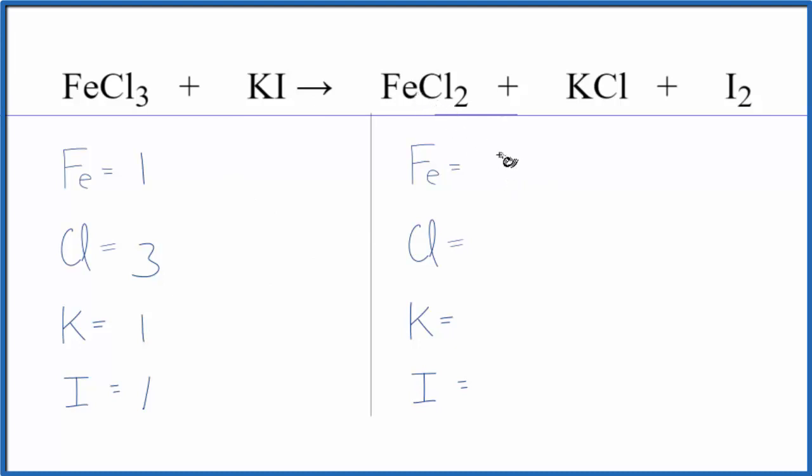On the product side we have the iron, one of those. Chlorine we have two. Don't forget this one either. So we have a total of three chlorine atoms, one potassium, and two iodine atoms.